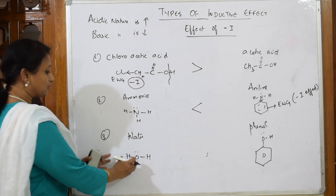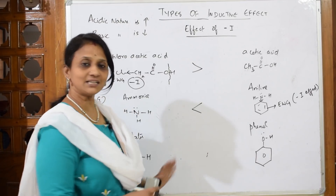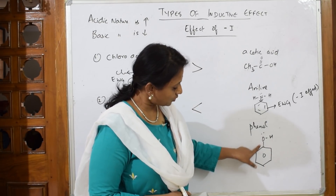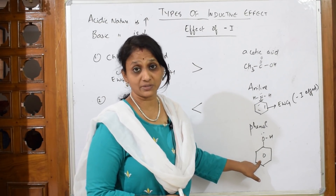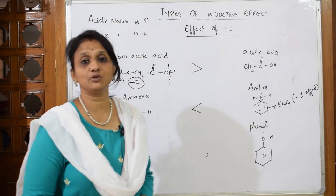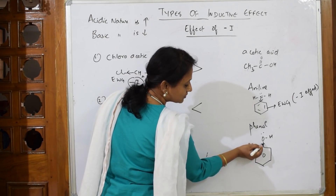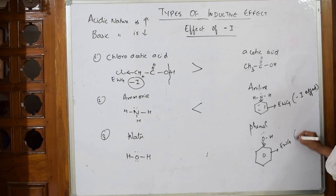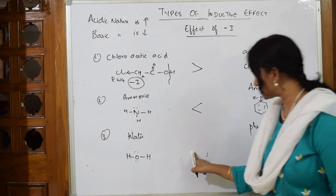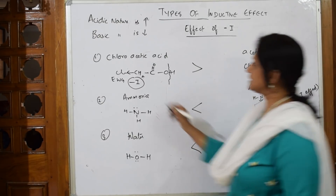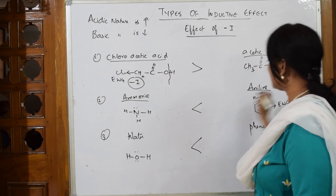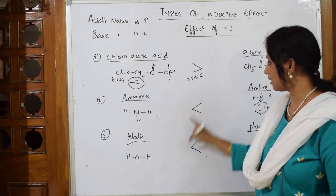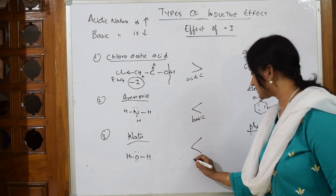Comparing water and phenol for acidic nature: in water, hydrogen is on either side of oxygen. In phenol, the benzene ring below oxygen is an electron withdrawing group — it drags the electron density, making the O-H bond weaker and facilitating H⁺ release. Because of this minus-I effect, phenol is more acidic than water. Summary: chloroacetic acid is more acidic; ammonia is less basic than aniline; water is less acidic than phenol.